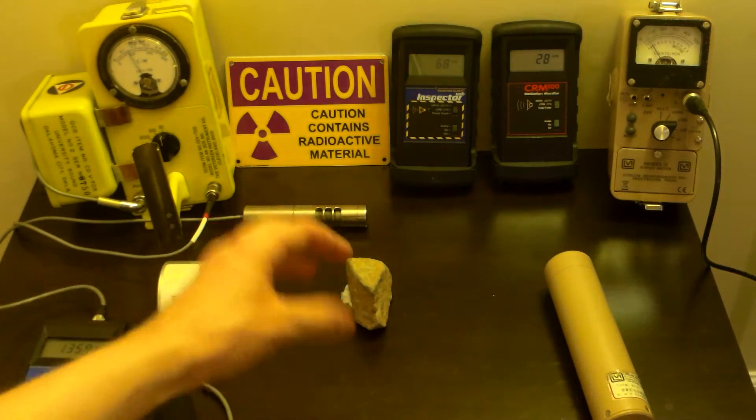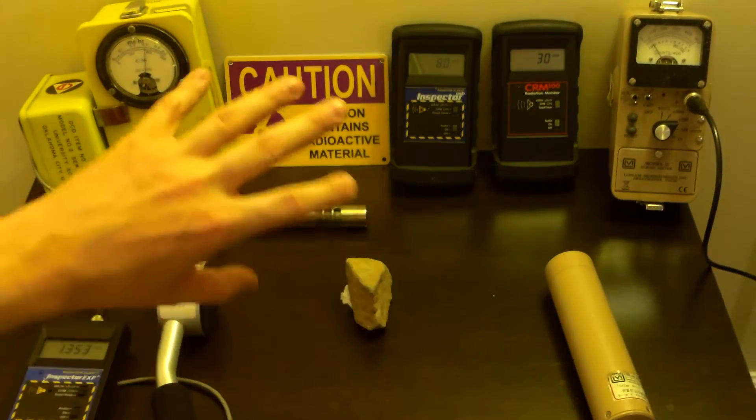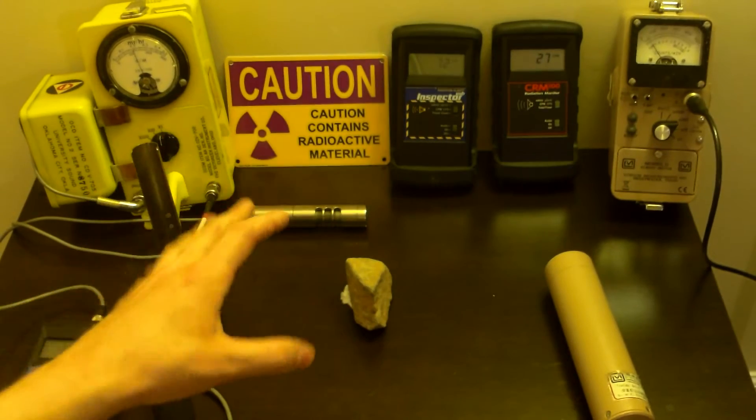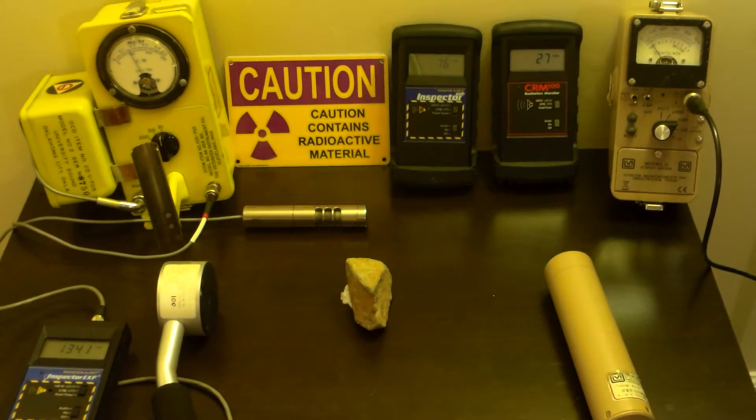And how to figure out how much alpha, beta, gamma, slash x-ray is coming out of this, how to separate them. Because a lot of times people seem to be confused as to how to figure out how much is alpha, how much is beta, how much is x-ray and gamma, right?